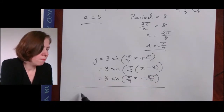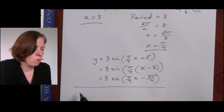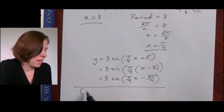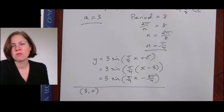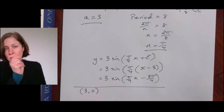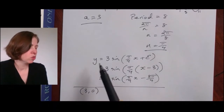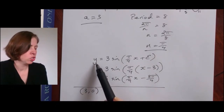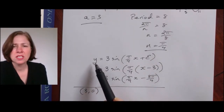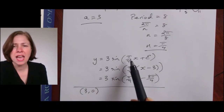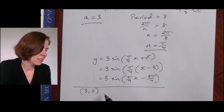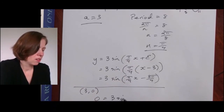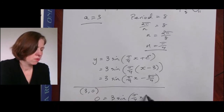There is another method: I'm told that when y is zero, x is three, which means (3, 0) is a point on my graph. So I substitute y equals zero and x equals three into the equation, giving zero equals three sine of (pi on four times three plus epsilon).